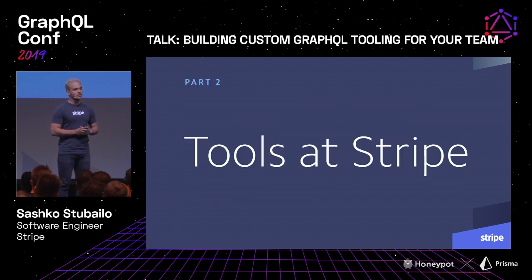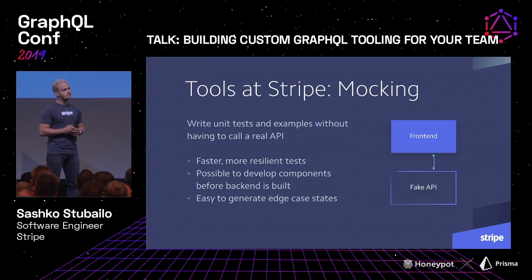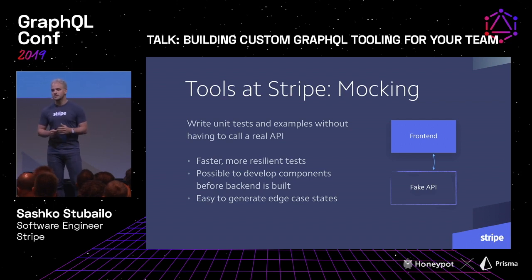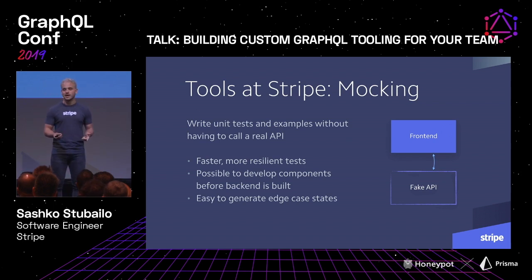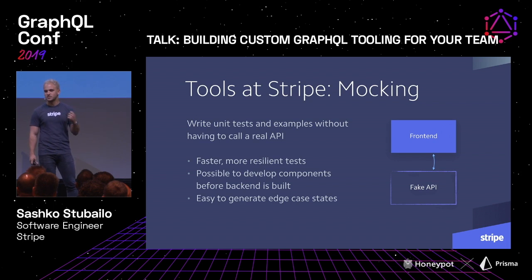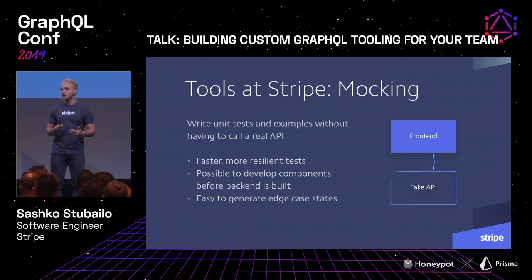Let me tell you about the custom tools we built around GraphQL at Stripe. The first thing I want to talk about is mocking. Mocking is a really useful tool that makes it easier to write more resilient tests without calling your actual API in production, to develop components more quickly, and to develop before your back end is implemented. It's also really easy to test finicky edge cases automatically when you can mock your API.